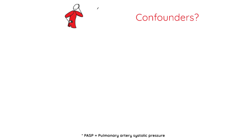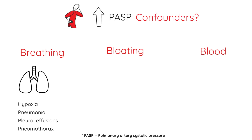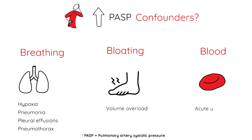One thing to keep in mind when you see an elevated PASP is that confounders or acute clinical changes might also increase it. Don't forget about three factors — breathing, bloating, and blood. For breathing, think hypoxia, pneumonia, pleural effusions, or pneumothoraces — any acute pulmonary process causing vasoconstriction or loss of lung vasculature. For bloating, volume overload can increase the tricuspid regurgitation used to estimate PASP. And for blood, acute anemia can raise cardiac output and thus raise PASP.